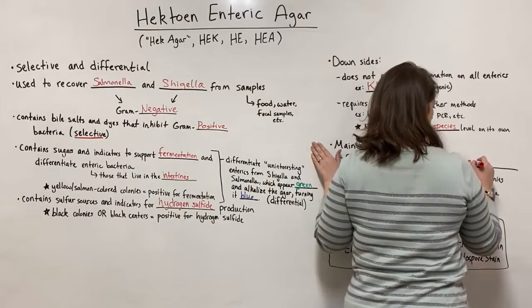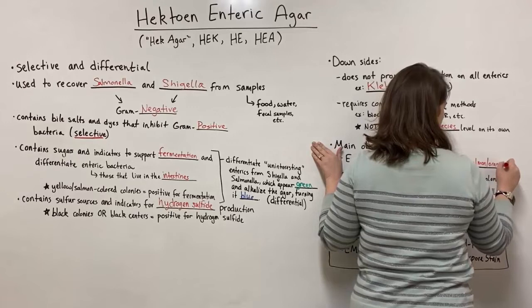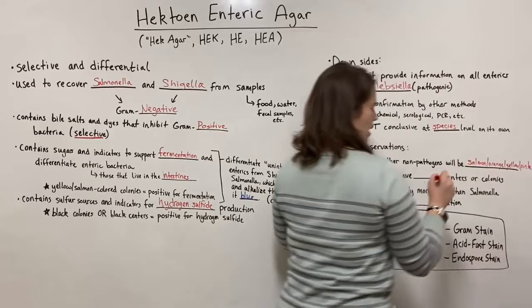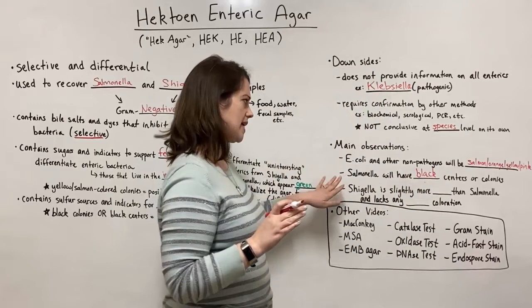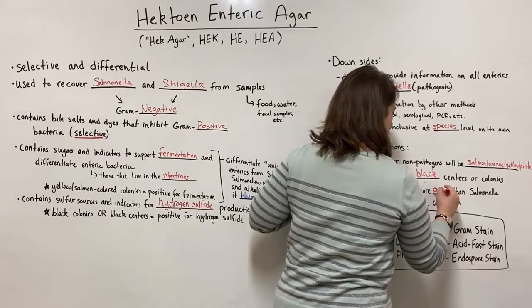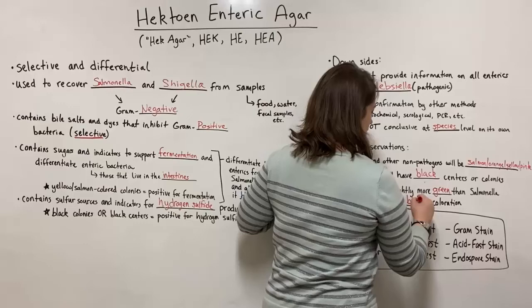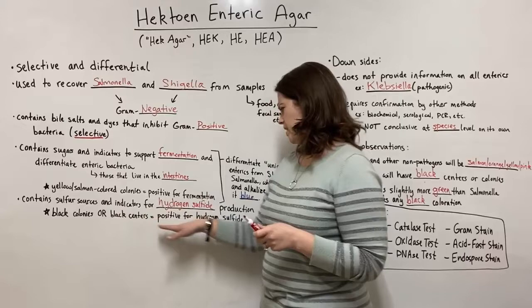To summarize the main observations: E. coli and other non-pathogens will generally produce a salmon, orange-yellow, or pink color. Salmonella will have black centers with green colonies, or outright black colonies. Shigella tends to be slightly more green than Salmonella and lacks any black coloration, because it does not produce hydrogen sulfide.